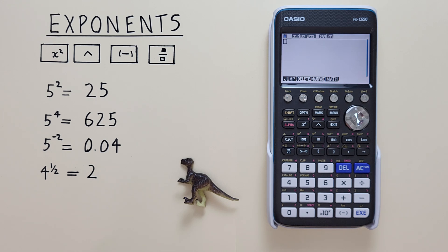To do this we'll use the x squared key that looks like this located here, the up arrow or caret key that looks like this located here, the negative key that looks like this located here, and the fraction key that looks like this located here.